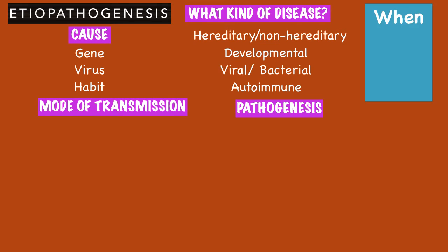The mnemonic to remember all of this is 'When Can Mother Pray?' — W for what kind of disease it is (hereditary, non-hereditary, developmental, viral, bacterial, autoimmune), C for the cause of the disease, M for mode of transmission, and P for pathogenesis.